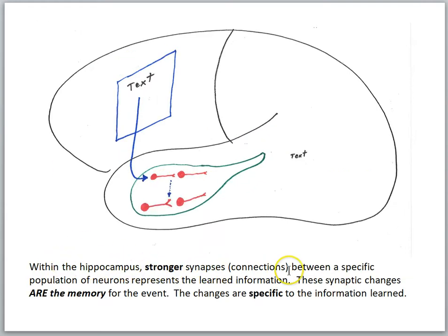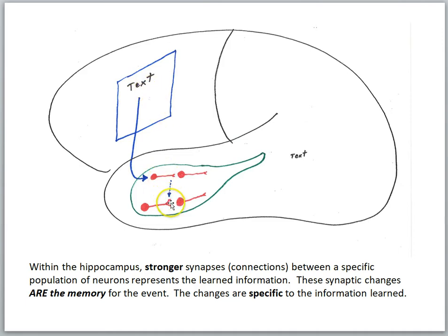Within the hippocampus, stronger synapses between a specific population of neurons represent the learned information — these synaptic changes are the memory for the event. Prior to reading the text, the strength of the synapse was at some baseline level. Because this is a learning episode, the effect in certain hippocampal synapses is to strengthen them, and that is the biological basis of the learning event. The cortex is also processing and changing to some extent as a result of this learning episode, but these hippocampal changes are very important for the initial learning phase.